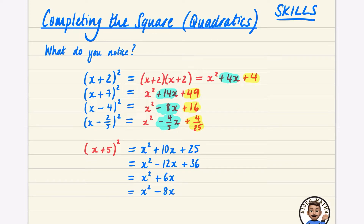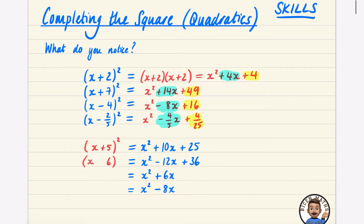The next one is going to be x minus 6 squared, because we need a 6 to produce the 36, and half of negative 12 is negative 6. So that gives x minus 6 squared, and that one definitely works.